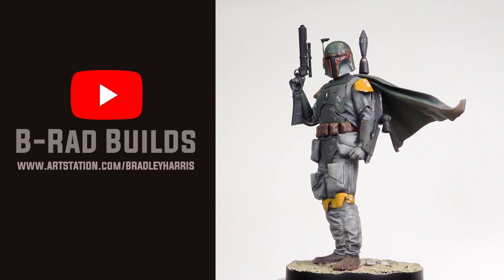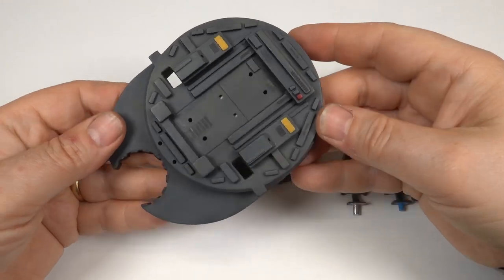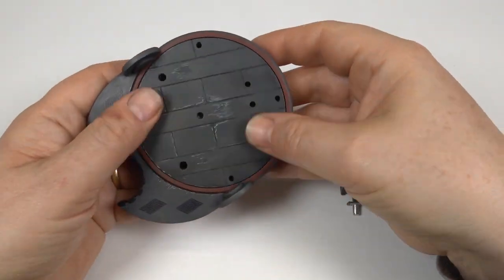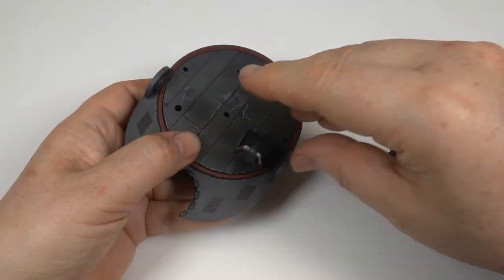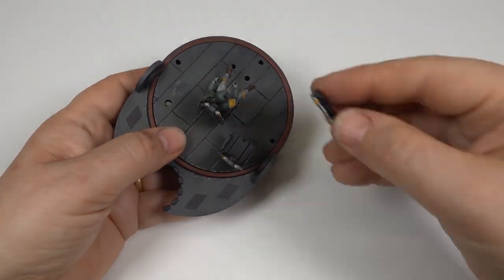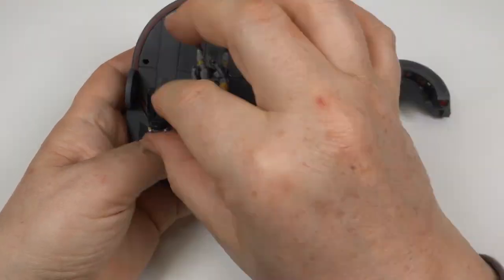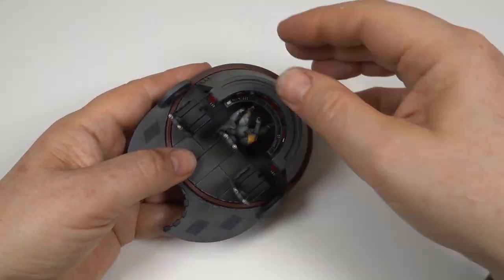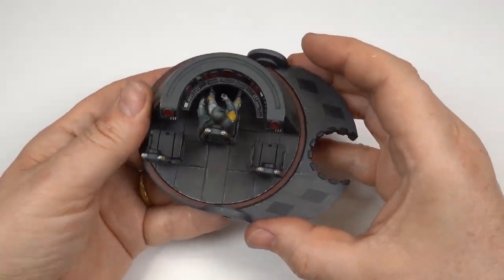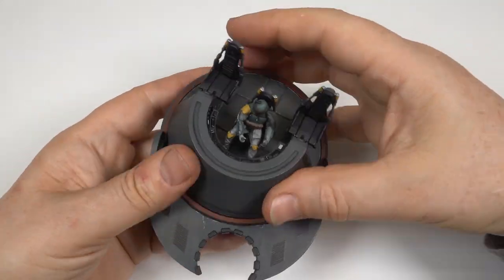While I had the paints out, I tackled the new cockpit parts as well. I added some more decals in exactly the same style as before and even painted Boba Fett again. This rotating module went together really well and at last I felt I was getting somewhere with the cockpit.